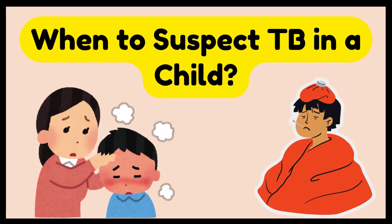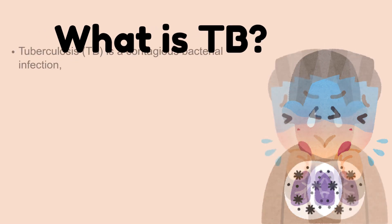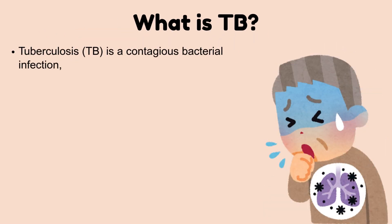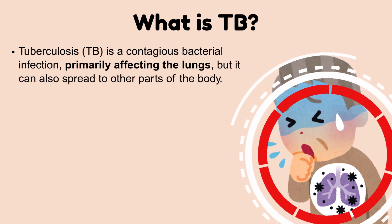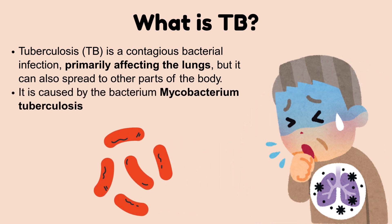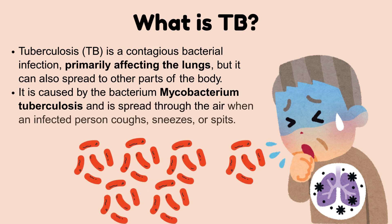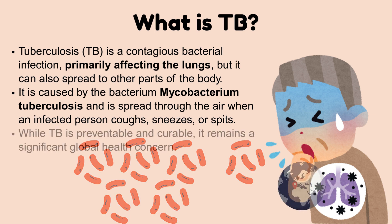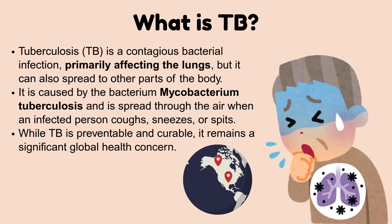When to suspect TB in a child. What is TB? Tuberculosis, TB, is a contagious bacterial infection primarily affecting the lungs, but it can also spread to other parts of the body. It is caused by the bacterium Mycobacterium tuberculosis and is spread through the air when an infected person coughs, sneezes, or spits. While TB is preventable and curable, it remains a significant global health concern.